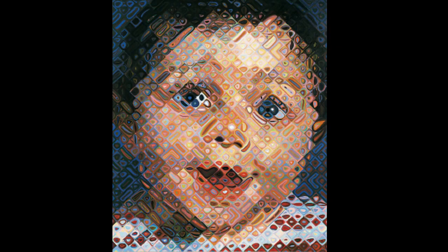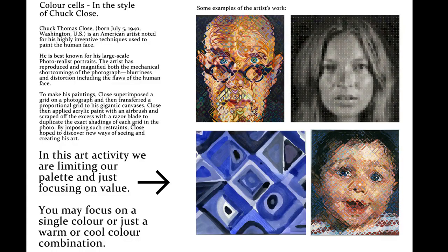Close superimposed a grid on a photograph and then transferred a proportional grid to his gigantic canvases. He applied acrylic paint with an airbrush and scraped off the excess with a razor blade to duplicate the exact shadings of each grid in the photo. By imposing such restraints, Close hoped to discover new ways of seeing and creating his art.